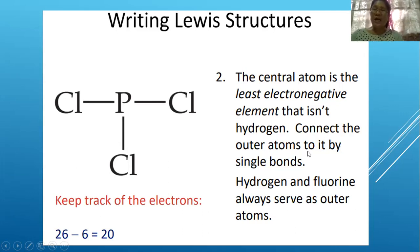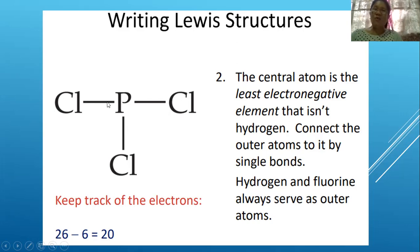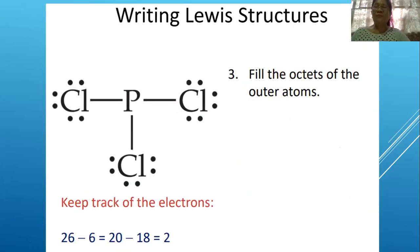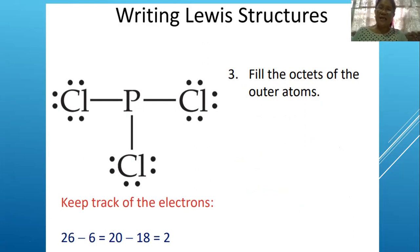Connect the outer atoms to the central atom by single bonds. Each single bond uses two electrons. For PCl3, three single bonds use six electrons. Subtracting six from 26 leaves 20 electrons remaining to be distributed. Rule three is to fill using the octet rule, meaning eight electrons around every element.